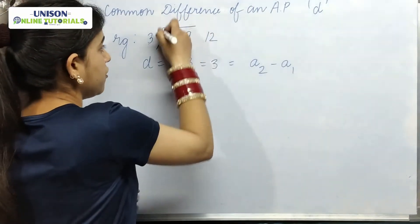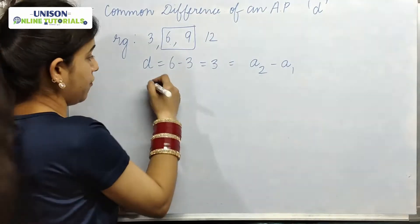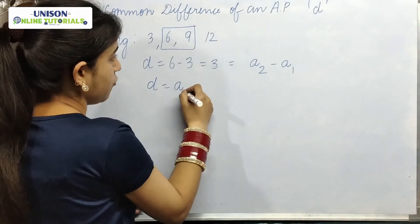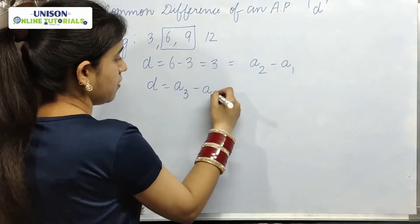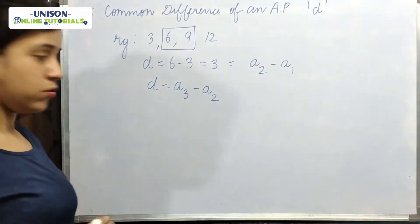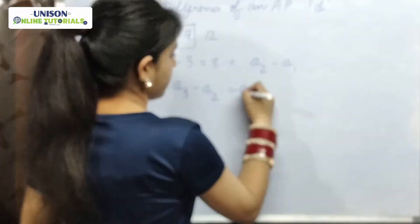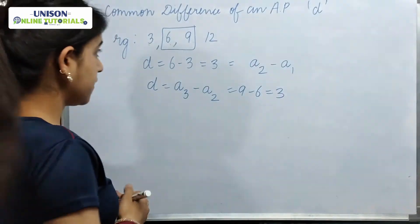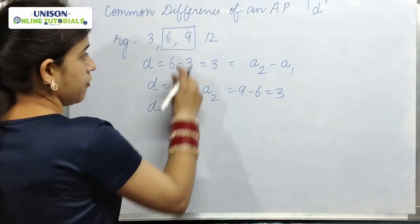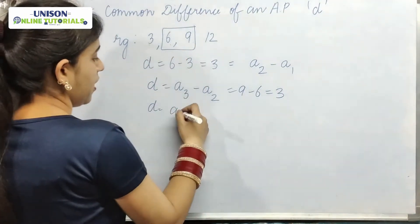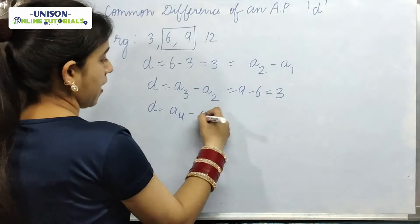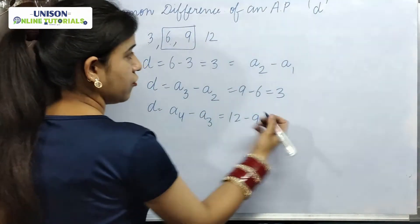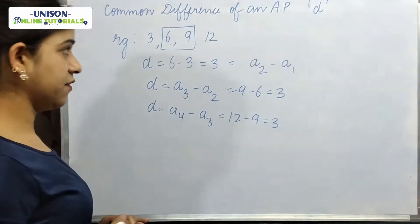We can also find the common difference using other consecutive terms. So d equals a3 minus a2: 9 minus 6 gives 3. Similarly, a4 minus a3: 12 minus 9 gives 3. So this is the common difference.